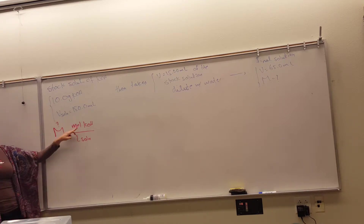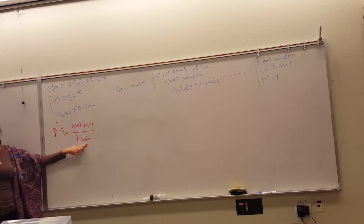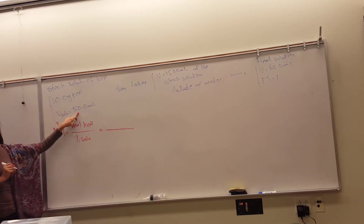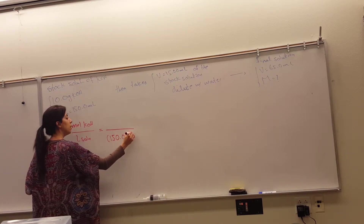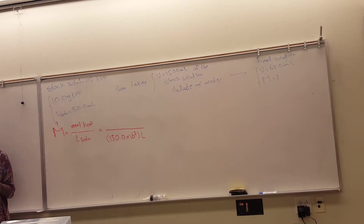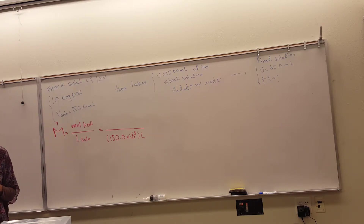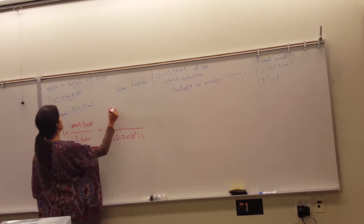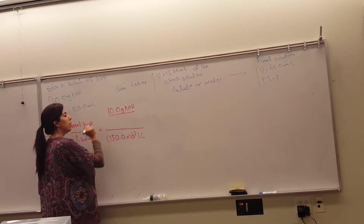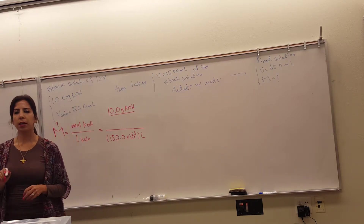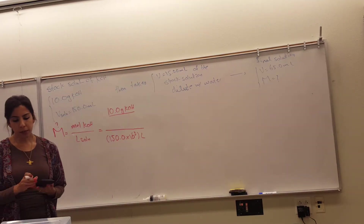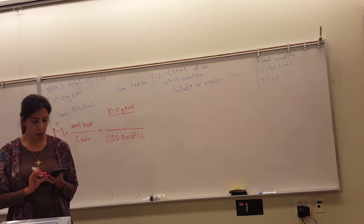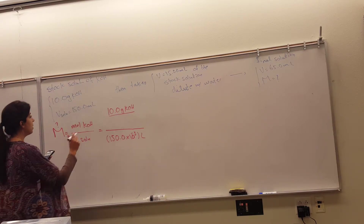To find the molarity you need moles of potassium hydroxide and the volume of solution. The volume is given as 150 milliliters, but for molarity it must be in liters. The number of moles of potassium hydroxide: take 10 grams and divide by the molar mass of potassium hydroxide. The molar mass is 39.1 + 16 + 1 = 56.11 grams per mole.